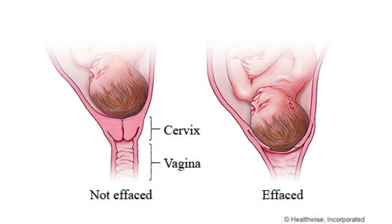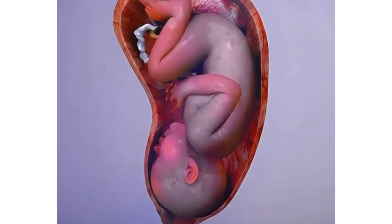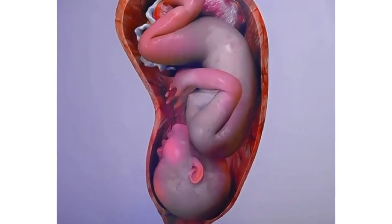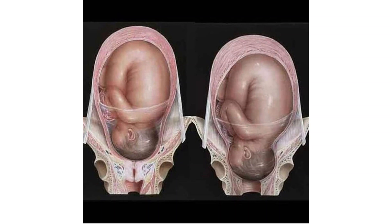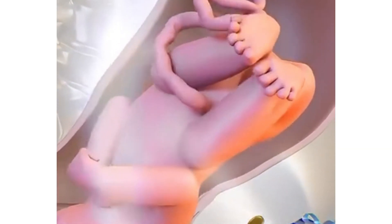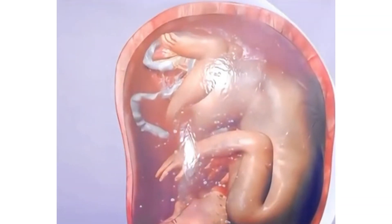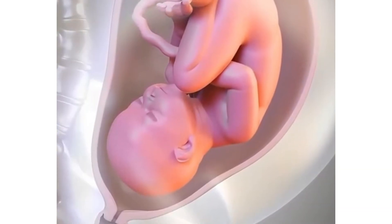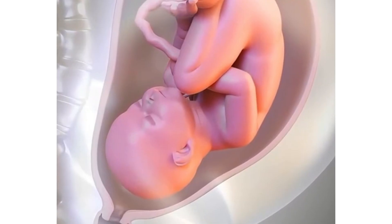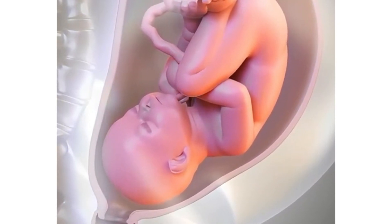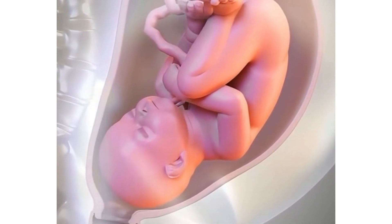During the active phase, strong regular contractions occur and the cervix dilates from four to ten centimeters, with fetal descent beginning. The second stage involves expulsion of the baby, from full cervical dilation to delivery of the baby, beginning with descent as the baby's head moves down the birth canal.